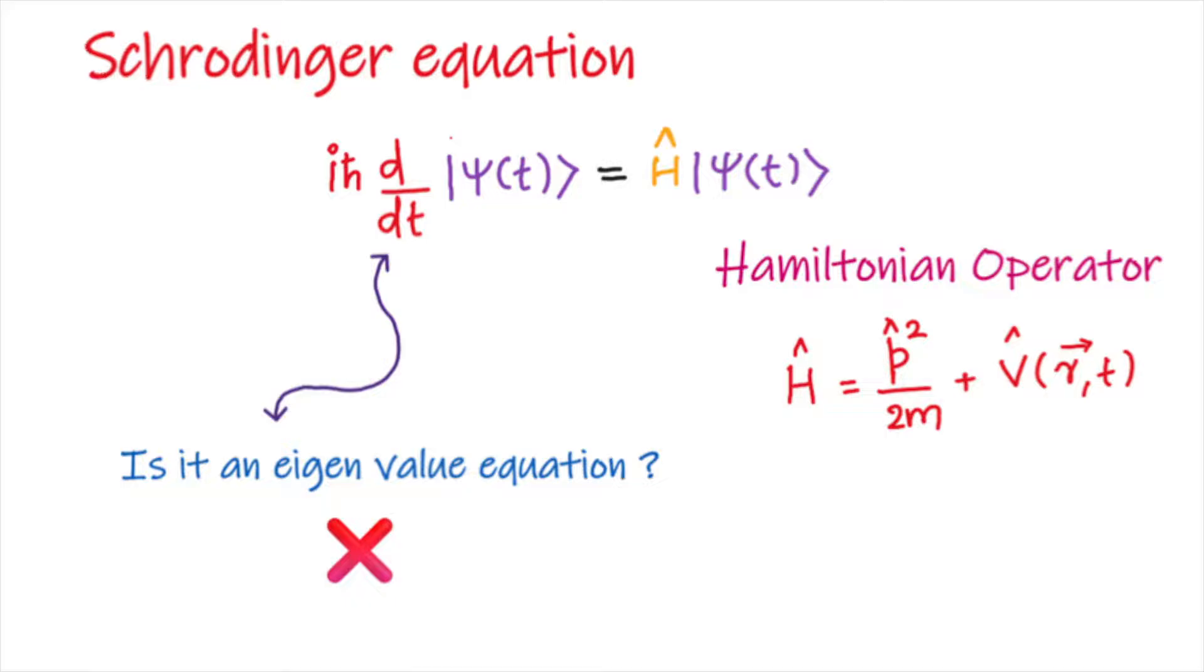As I said earlier, the time evolution of the state vector ψ of a system is governed by the time dependent Schrödinger equation, or it can be simply called as Schrödinger equation, which is given by iℏ d/dt |ψ⟩ = Ĥ|ψ(t)⟩.